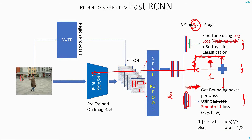When calculating the loss or fine-tuning the network, you are doing it on the ROI proposals and not on the entire feature maps. Also, when they fine-tuned the network, they fine-tuned it only from the third convolution layer onwards. They did not fine-tune layer 1 and layer 2.